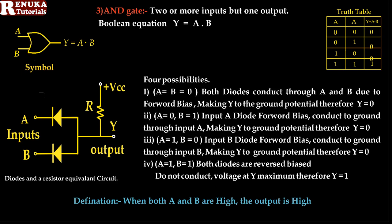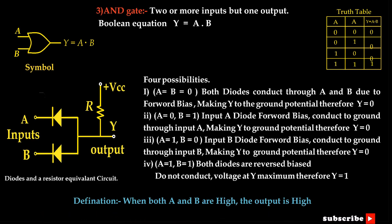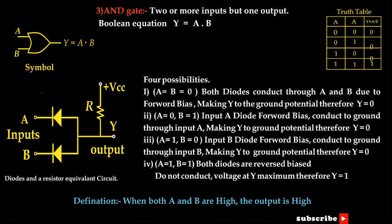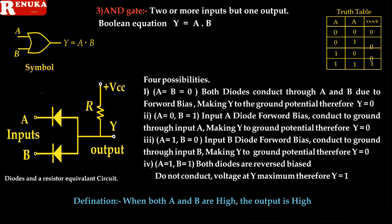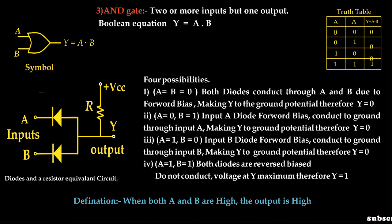The third gate is the AND gate. It also has two or more inputs but only one output. If A and B are the input variables, the output is given by the Boolean equation Y equal to A dot B. The AND gate is used for multiplication of binary inputs. The logic circuit of the AND gate can be constructed using two diodes and a resistor as shown in the figure. Two diodes are connected to inputs A and B, their anodes are common, and the output is taken across the anode and ground. There are two inputs and four possibilities.